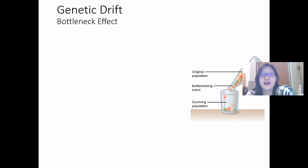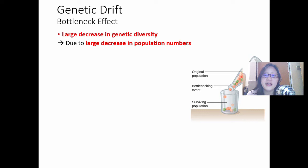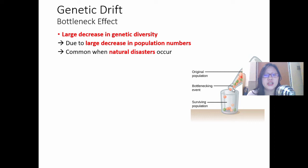The bottleneck effect is the idea that there's a large decrease in genetic diversity due to a sudden large decrease in population numbers. This is common when natural disasters occur. It's called the bottleneck effect because of the shape of a bottle — a wide base narrowing to a neck. In the diagram, the original population represented by green, red, and orange balls goes through the bottlenecking event and only a few survive — there's a large decrease in population numbers.